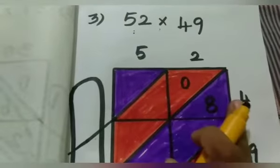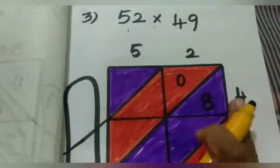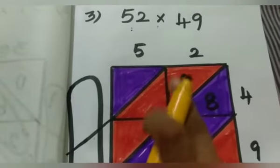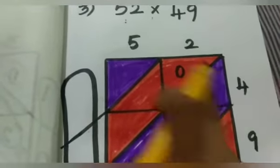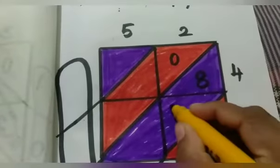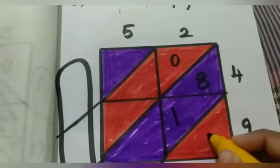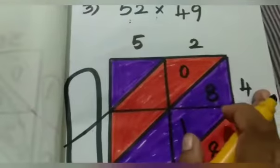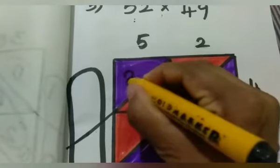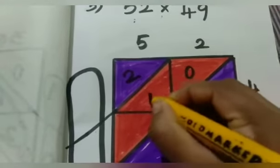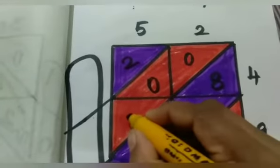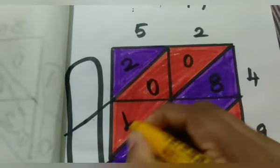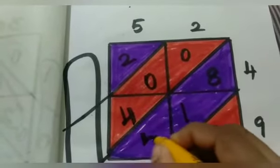First, multiply 2 and 4: 2 fours are 8, so 0 is the 10-strip and 8 is the 1-strip. Next, 2 nines are 18: 1 and 8. Next, 5 fours are 20: 2 and 0. Next, 5 nines are 45: 4 and 5.